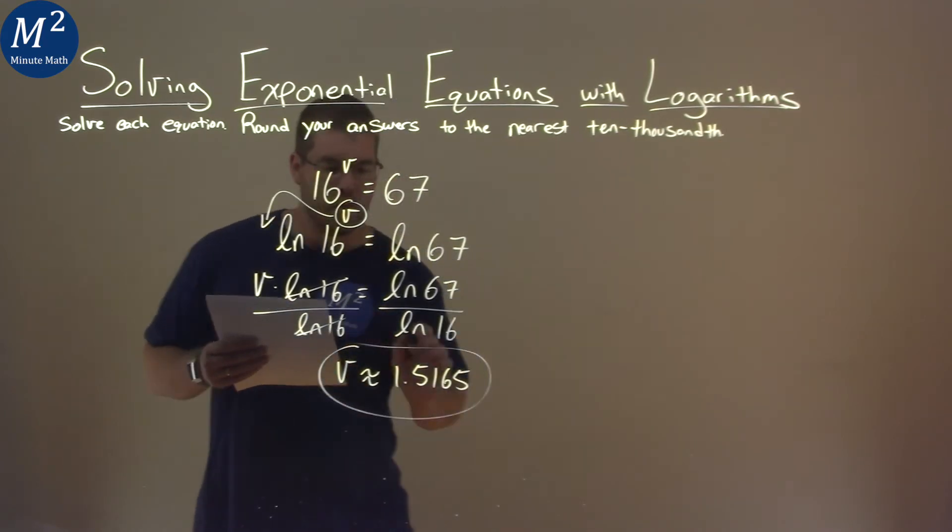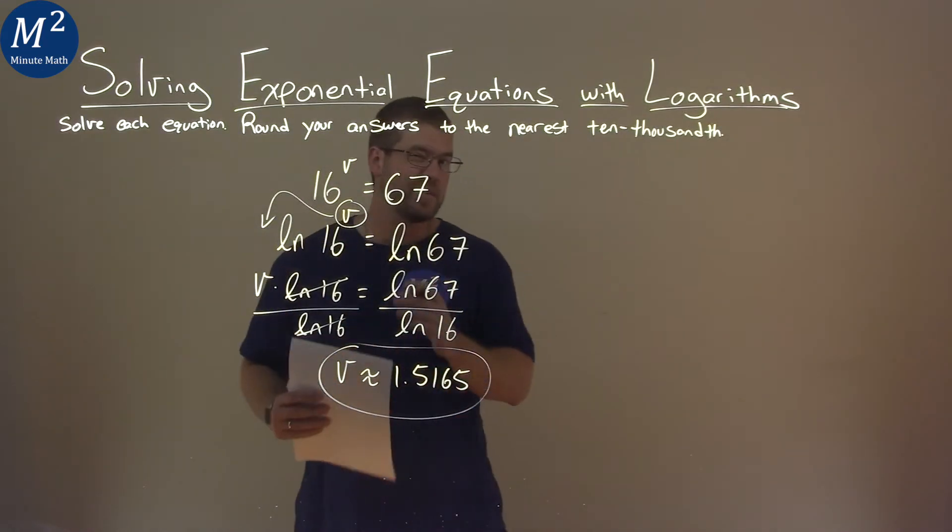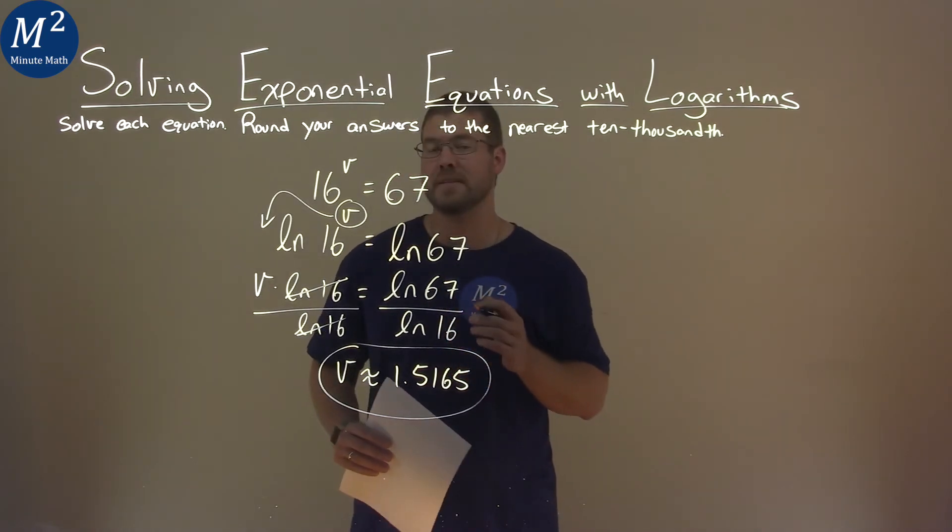Again, that's approximate. And so our final answer here is v is approximately equal to 1.5165.